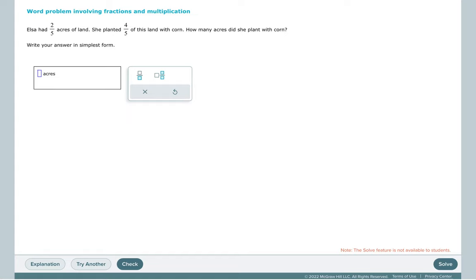This topic is word problems involving fractions and multiplication. Elsa had two-fifths acres of land. She planted four-fifths of this land with corn. How many acres did she plant with corn?